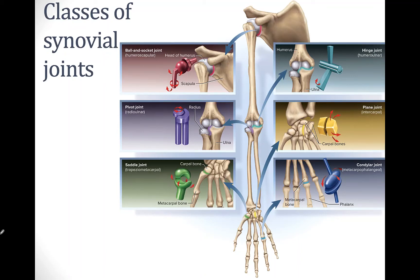There are six different classes of synovial joints and this illustration has the arm which shows an example of all six.